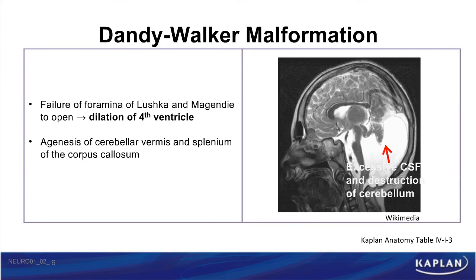The next congenital malformation is the Dandy-Walker malformation, which arises due to a failure of the foramina of Luschka and Magendie to open, resulting in a dilation of the fourth ventricle. It's associated with agenesis of the cerebellar vermis and splenium of the corpus callosum, as well as with hydrocephalus and spina bifida.